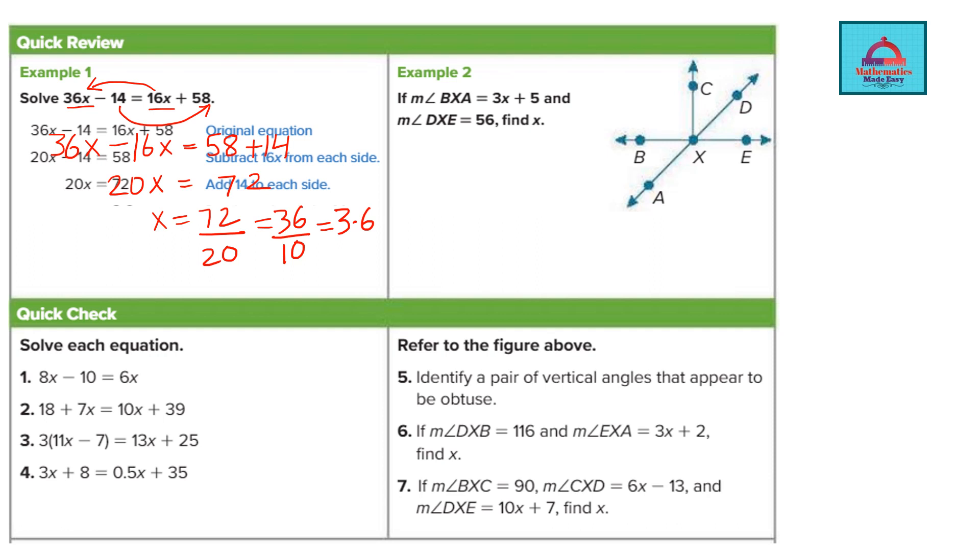In a similar way we can solve these equations that you see here for the variable x. So I'm going to move 6 on the other side. It becomes 8x minus 6x equal to 10 which is 2x equal to 10 or x equal to 5. So I divided both sides by 2 to get to the answer.